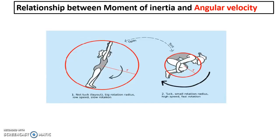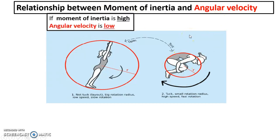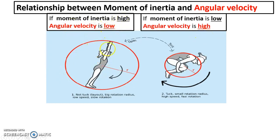Quick recap on our relationship between moment of inertia and angular velocity. Can you pause the screencast and try to work out the relationship between moment of inertia and angular velocity for the open, untucked position versus the tucked position? You should have had something along these lines: the moment of inertia is high in the untucked position because the distribution of mass is further away from the transverse axis, which means angular velocity is low. Conversely, when the moment of inertia is low because the distribution of mass from the transverse axis is closer, this means that we have an increased angular velocity — so we can rotate faster.